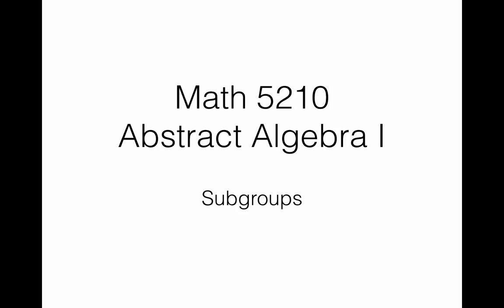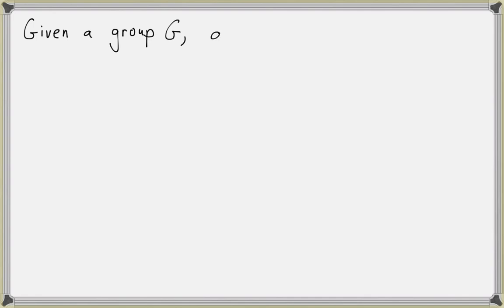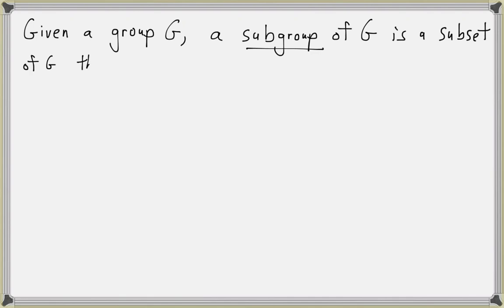In this lesson we will discuss the subgroups of a group. One way to study the structure of a group is to study the subsets of a group that also form a group. These subsets are called subgroups. So given a group G, a subgroup of G is a subset of G that is also a group under the same operation of G.